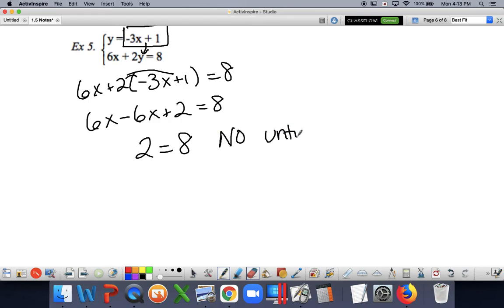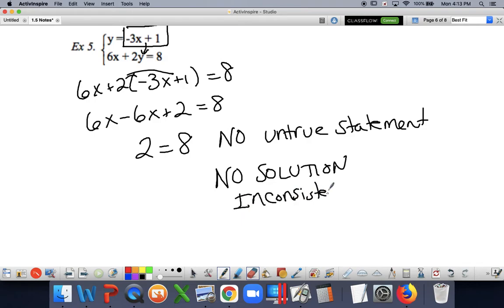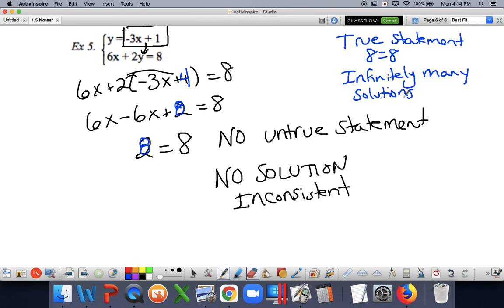Does 2 equal 8? No. This is an untrue statement. This is not a valid statement. When I get something like this, my solution is that there is no solution. We have an inconsistent set of lines here, meaning they are parallel to each other and they are never going to meet up. So now if you were, for instance, solving this and we had a 4 here instead, and when I distributed it, I got an 8, and then this became 8 equals 8. So those would be the exact same line that are just on top of each other and we classify that as consistent and dependent.